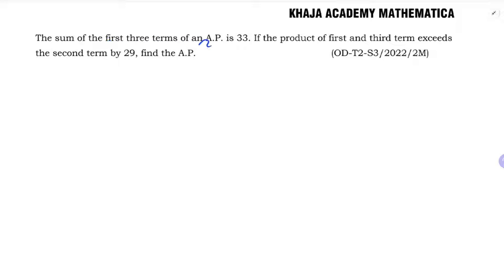The sum of first three terms of an AP is 33. If the product of first and third term exceeds the second term by 29, find the AP. We need to find first term, second term, third term and so on. The problem is based on three terms - sum of three terms and the product with related conditions.